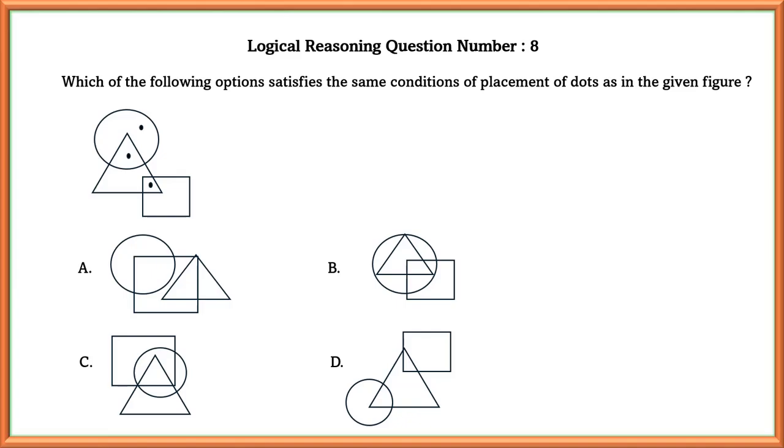Logical reasoning question number 8. Which of the following options satisfies the same condition of placement of dots as in the given figure? As we can see here, dot 1 is placed on a triangle and rectangle and dot 2 is placed on a circle and triangle. Dot 3 is placed only on the circle.